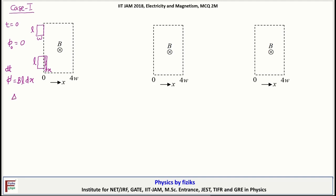So change in flux delta phi is given by phi dash minus phi 0 and this will be B L dx. Now induced EMF E is minus d phi by dt. So this will be minus B L dx by dt and that is minus B L v.